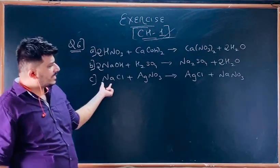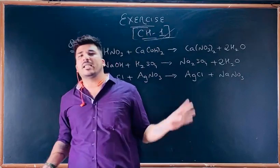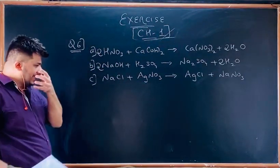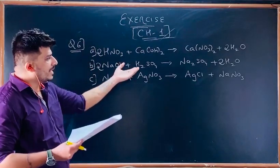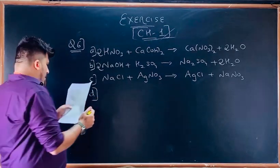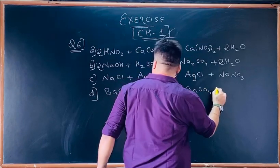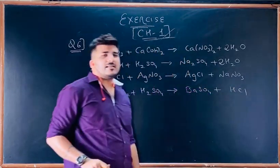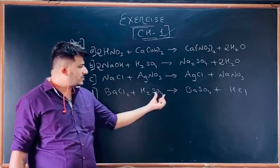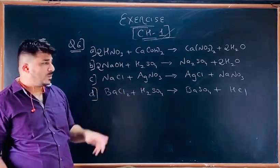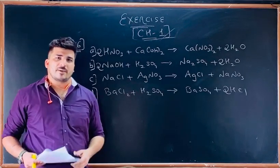To balance NaOH + H₂SO₄ → Na₂SO₄ + H₂O: Na is 2 on the right, 1 on left — multiply NaOH by 2. Hydrogen: 2+2=4 on left, 2 on right — multiply H₂O by 2, giving 4. Sulfur: 1 on both sides. Oxygen: 2+4=6 on left, 4+2=6 on right — both sides balanced. Third: NaCl + AgNO₃ → AgCl + NaNO₃ — Na:1, Ag:1, Cl:1, O₃ on both sides — already balanced, no need to do anything. Also, BaCl₂ + H₂SO₄ → BaSO₄ + HCl — multiply HCl by 2 to balance Cl and H; equation is balanced.